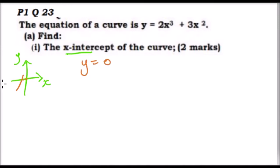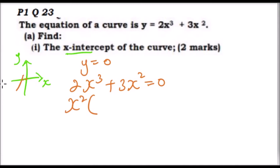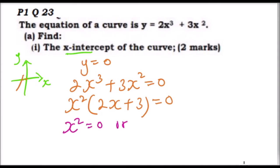Therefore we equate 2x cubed plus 3x squared equals zero. This is a cubic equation, so we can factor out x squared, leaving us with x squared times (2x plus 3) equals zero. This means x squared equals zero or 2x plus 3 equals zero, because when you multiply two factors and get zero, one of them must equal zero.